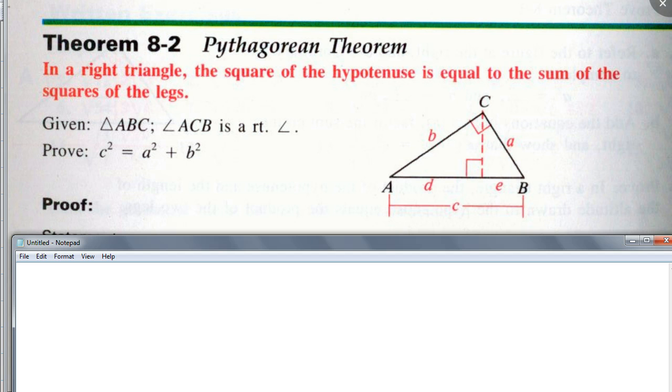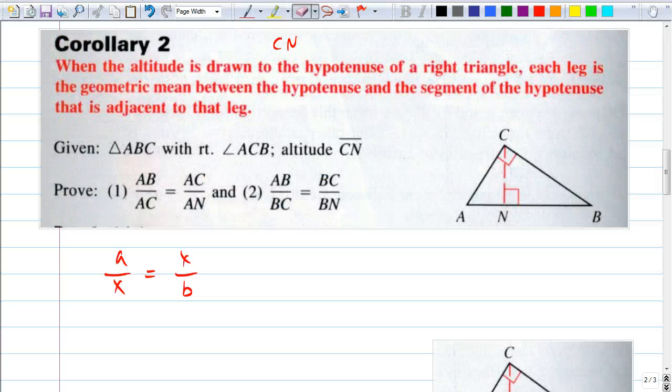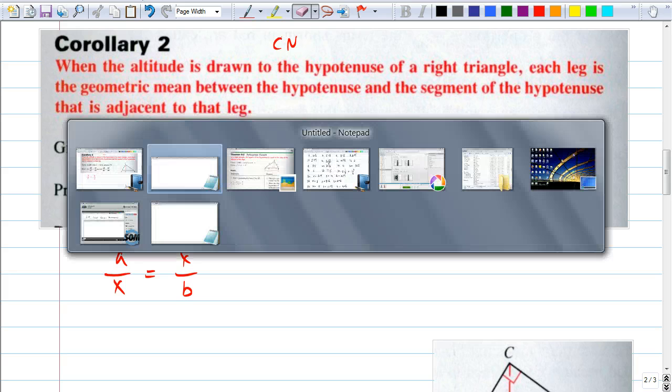Wait, doesn't that sound familiar? Didn't we do that? Altitude corollary. Yeah, so let's review this corollary that we learned last time. Especially the second one. Do you remember that CN? Okay, that's how we, just the same as what we have here, right?